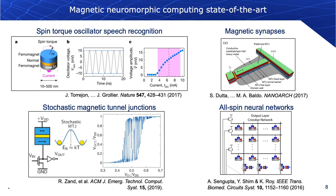The current state of the art in magnetic neuromorphic computing is an exploding field. There has been work on spin torque oscillators for speech recognition, stochastic magnetic tunnel junctions, synapses with domain walls, and synapses and neurons with all-spin neural network type domain walls.